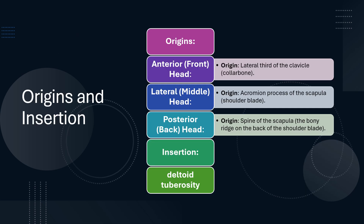The deltoid muscle has three distinct parts, each with its own origin, and they all come together and have a common insertion point. The origin for the anterior head is the lateral third of the clavicle. The lateral head originates from the acromion process of the scapula, and the posterior head originates from the spine of the scapula.